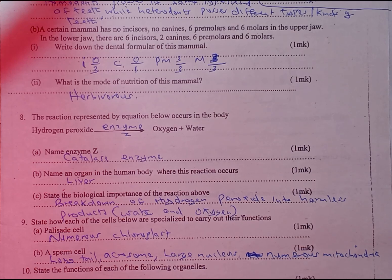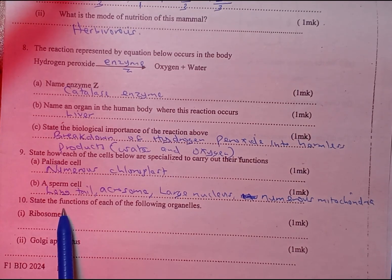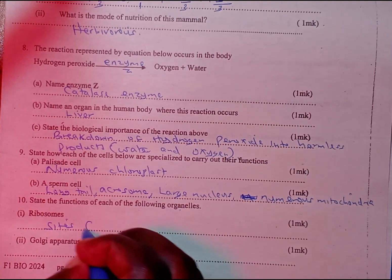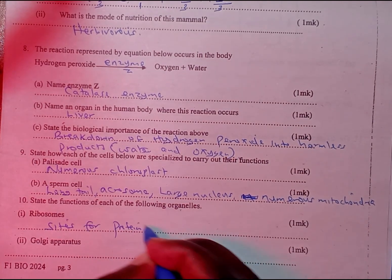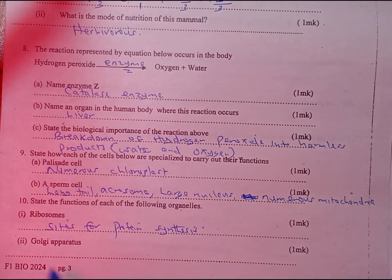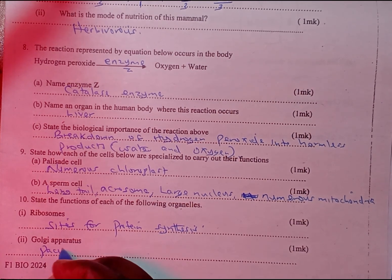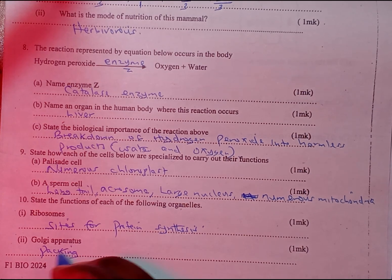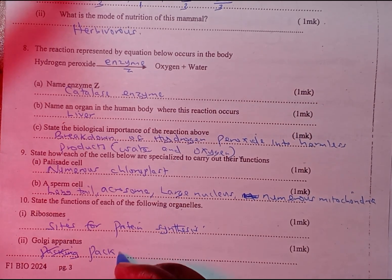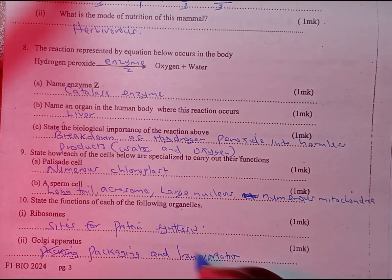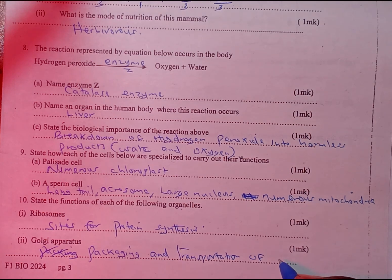Question number 10: state the functions of each of the following organelles. Number 1 — ribosomes: they form sites for protein synthesis. We also have the Golgi apparatus, also known as Golgi bodies: their function is the packaging and transportation of glycoproteins.